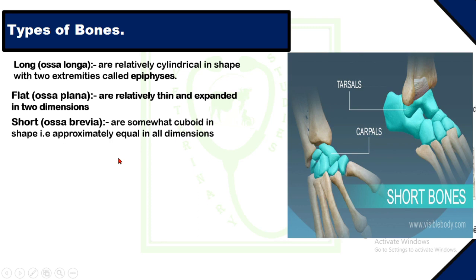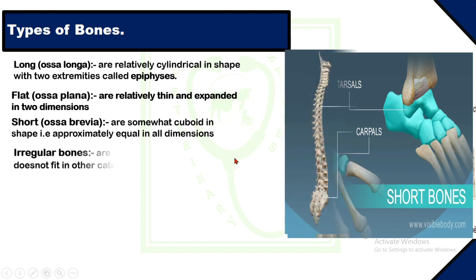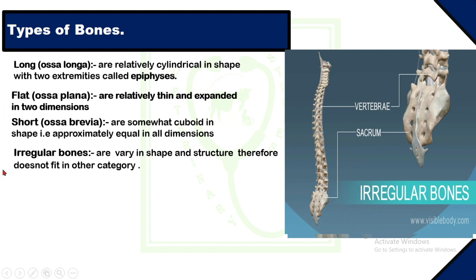Short bones are somewhat ovoid in shape and approximately equal in all dimensions. They have no marrow cavity and are found in complex joints such as the hock joint or fetlock joint. Short bones provide stability and movement. Irregular bones, as the name denotes, vary in shape and structure and therefore do not fit into any other category. Vertebrae are included in this category. They protect, support, and provide the site of muscle attachment.